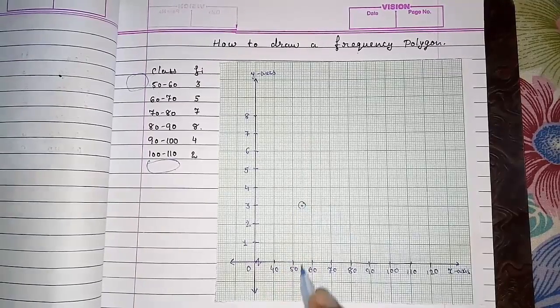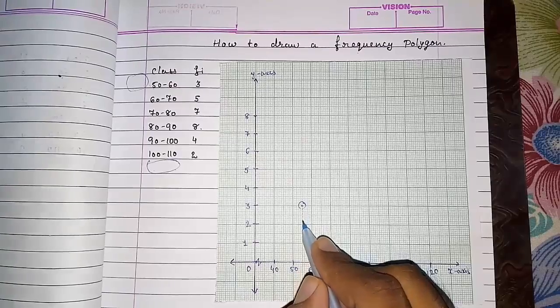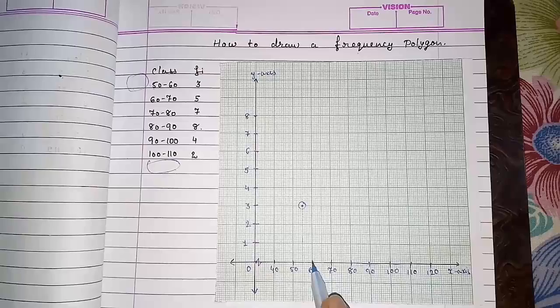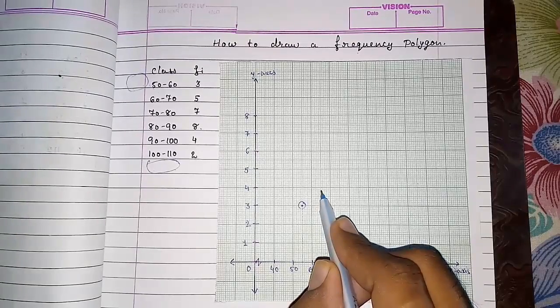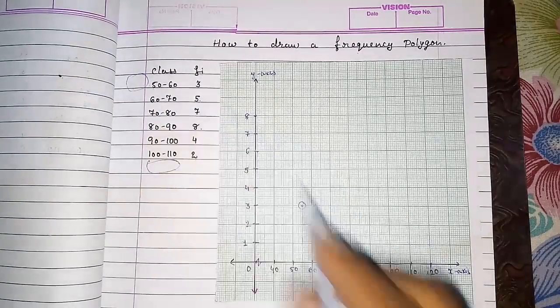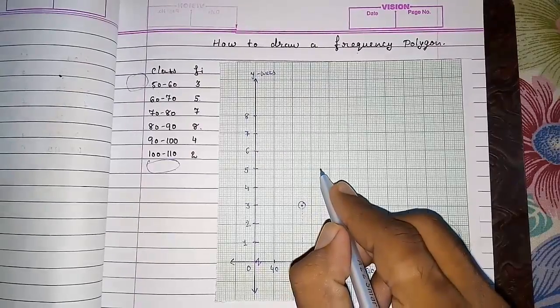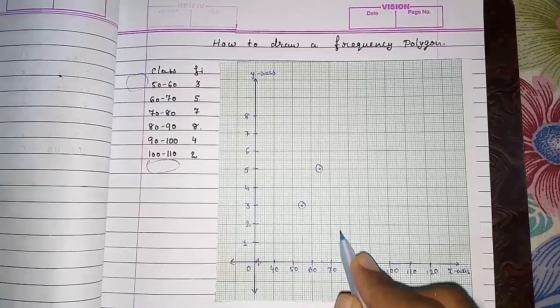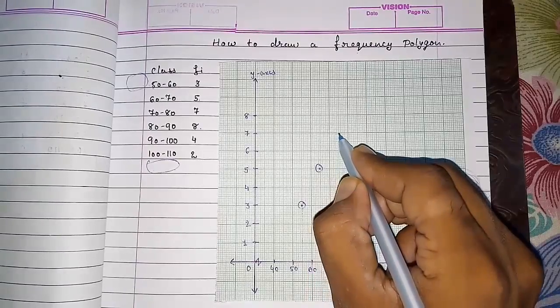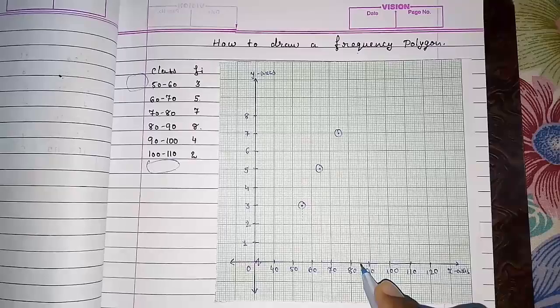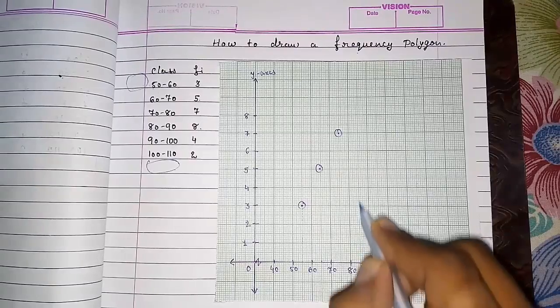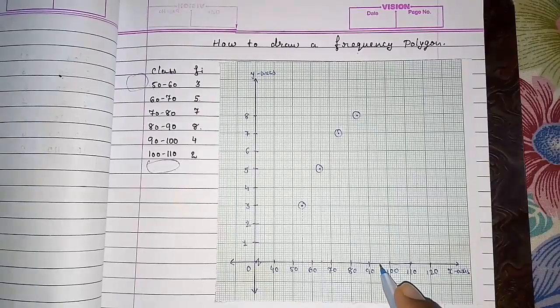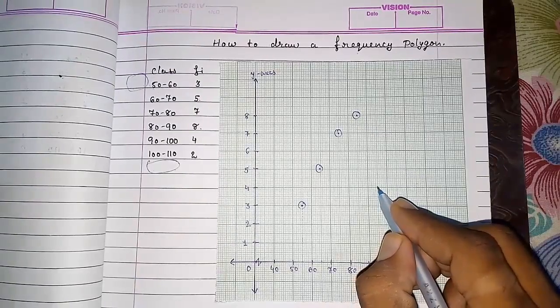Look here, I am drawing an imaginary line so that you come to know. From the midpoint you have to draw a point. From midpoint of 60 to 70, now we have to take frequency 5. Look here, 60 to 70 is 5, so from the midpoint I am drawing it on 5. Then 7 from the midpoint of 70 to 80. 80 to 90, from the midpoint again we will reach at 8. Look here, 8. Now for 90 to 100, so here it will come 4.